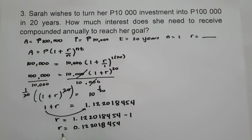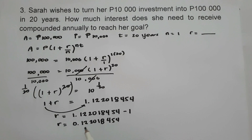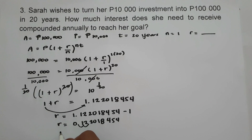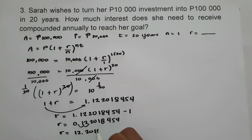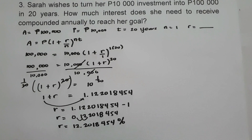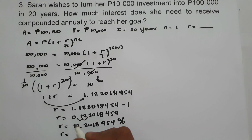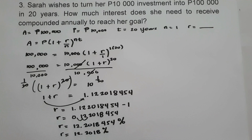To express R as a percentage, we move two decimal places to the right. So the interest rate is 12.2018454%, or you can write it as R equals 12.2018% rounded to four decimal places.